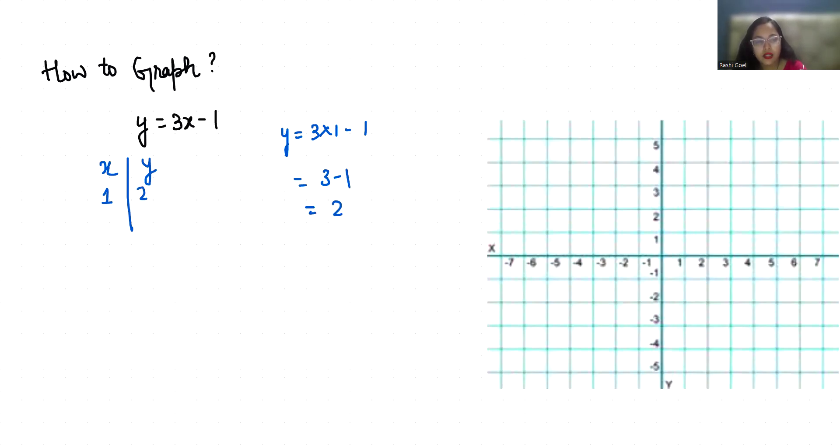Now if our x is 2, y equals 3 times 2 minus 1, that is 6 minus 1, 5. So if our x is 2, y is 5.